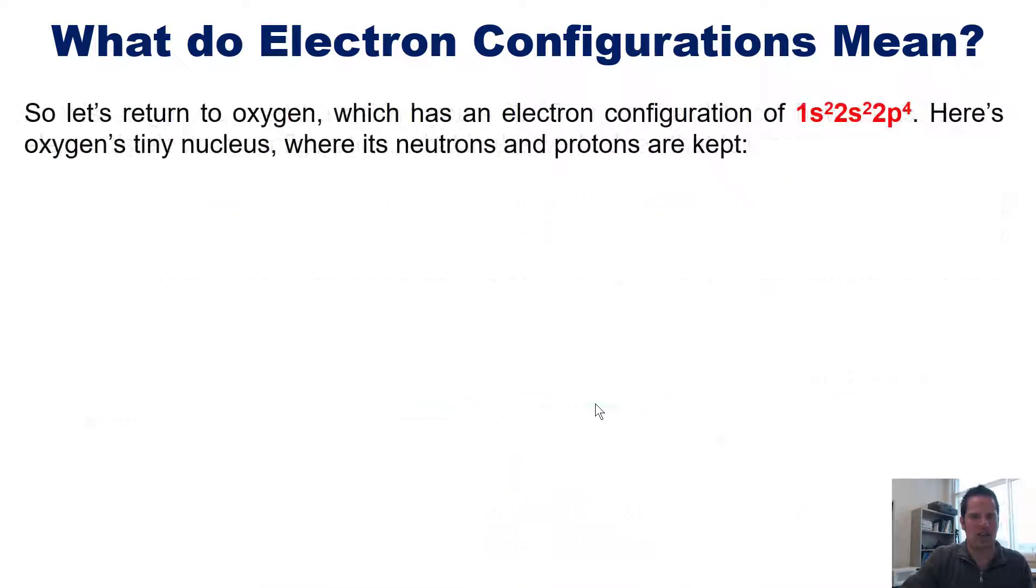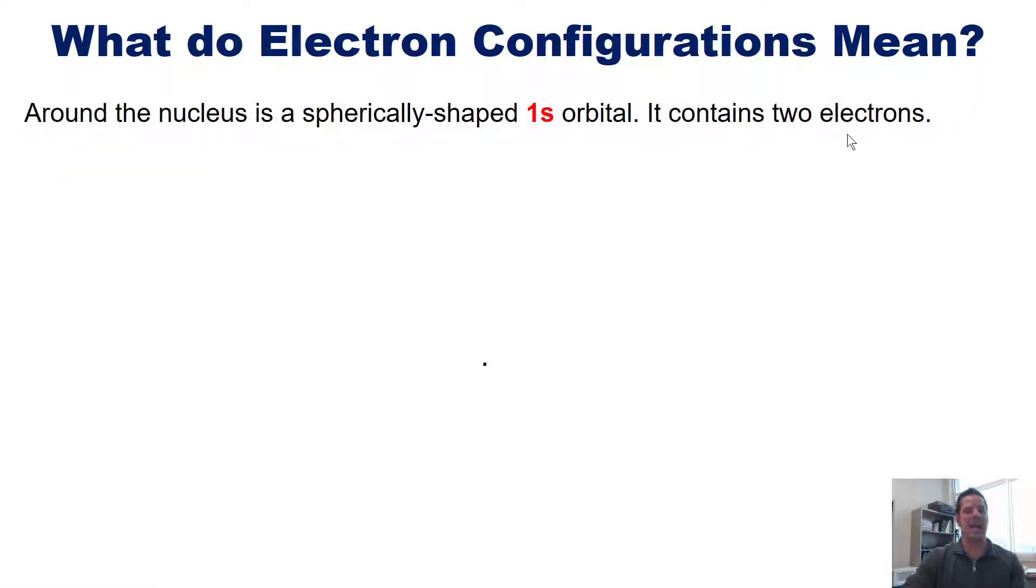With that said, let's return to oxygen, which has an electron configuration of 1s2, 2s2, 2p4. I want to show you a little bit deeper now what each of these things means. Here's the oxygen's tiny nucleus, where it keeps its neutrons and protons. Now, outside or surrounding that atom's nucleus, you should understand that there is a spherically shaped 1s orbital, right here. And it contains two electrons. That is a 1s2.